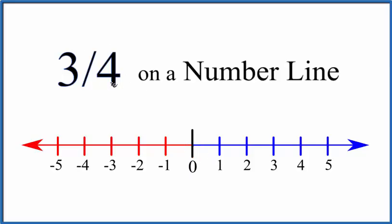We want to find 3 fourths. So 3 is smaller than 4. This number is going to be less than 1. That means it's going to be right here on our number line. Let's zoom in on that.